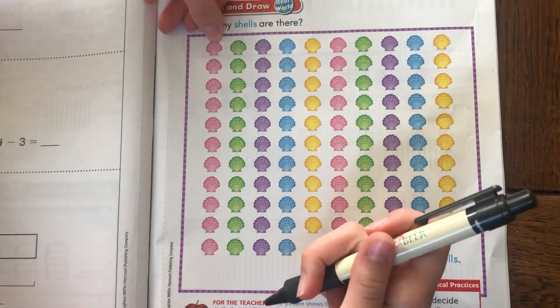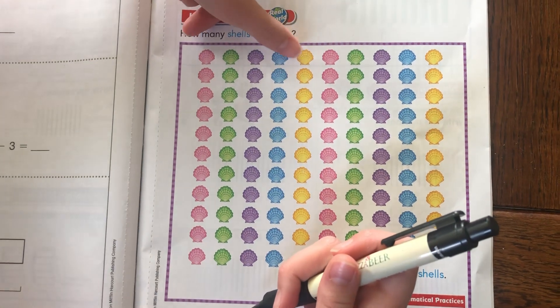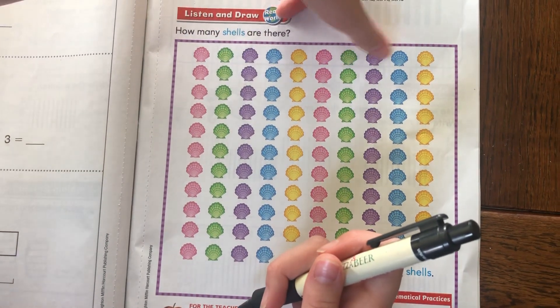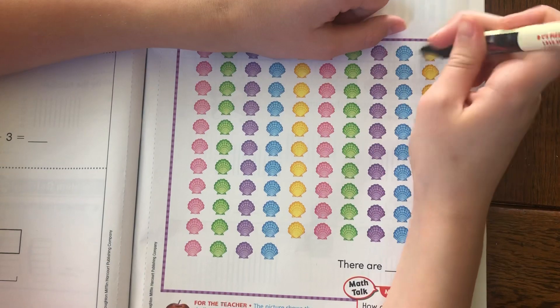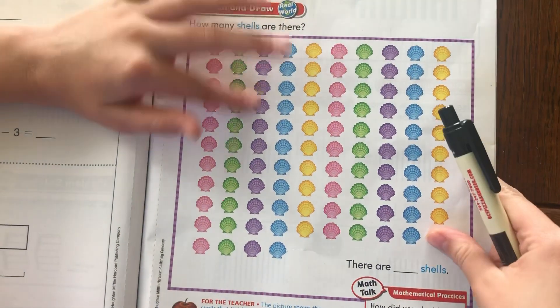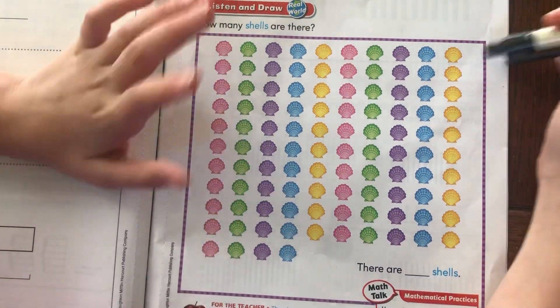I am going to count this top row. So, there's 1, 2, 3, 4, 5, 6, 7, 8, 9, 10. So, since there's 10 in this, there's going to be 10 in all of these rows, because they're the same, except for this last row. So, let's count by 10.